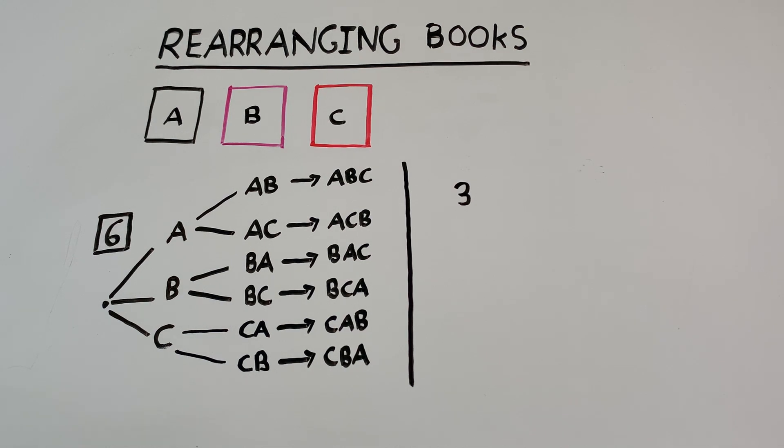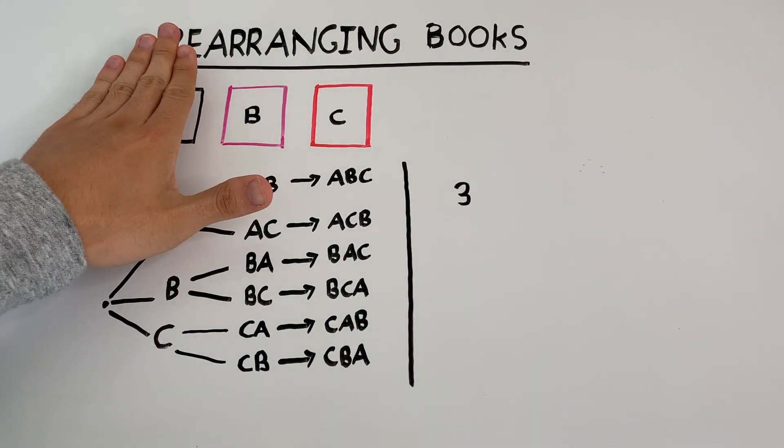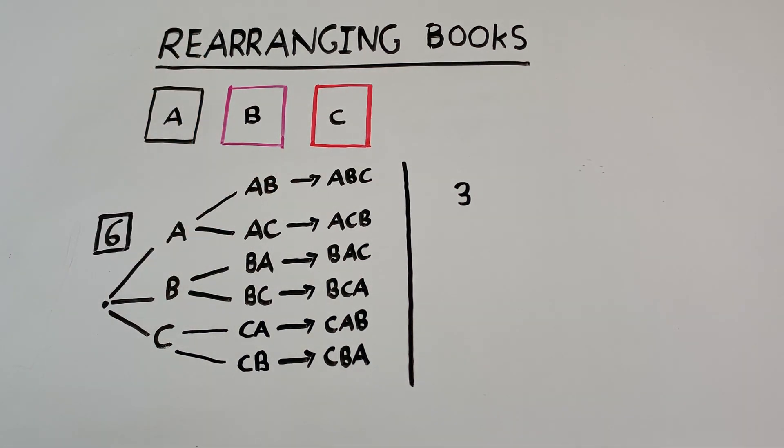Now for each of these three choices, we have two choices for the next book. For example, if book A was placed first, either book B or book C goes next.